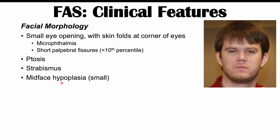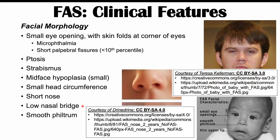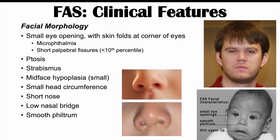Additional facial features include midface hypoplasia (small midface), small head circumference, a short nose, low nasal bridge, and a smooth or absent philtrum — the philtrum being the groove between the lip and the nose. Patients also have a thin upper lip. In summary, the characteristic facial findings include a smaller head, small midface, reduced or absent philtrum, small eye openings, a small nose, and a thin upper lip.